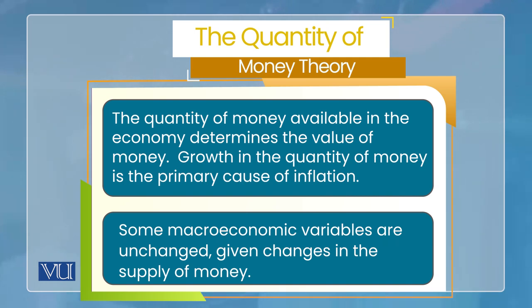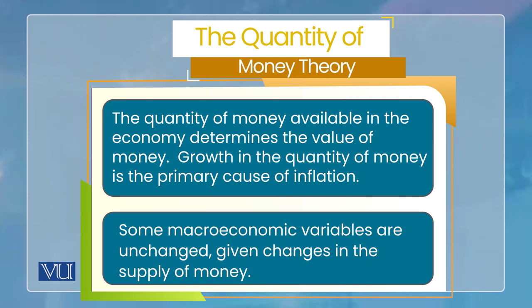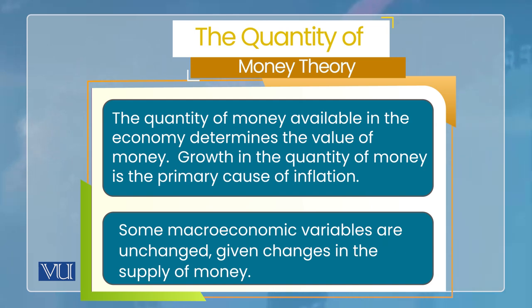یعنی کہ inflation کا primary determinant — price کے بڑھنے کا — وہ money supply ہے according to Milton Friedman. اس کو سمجھنے کے لیے money demand، money supply، money market equilibrium سمجھنا ہوگا جو کہ اس course میں already discuss ہو چکا ہے. Quantity theory of money کے مطابق: the quantity of money available in the economy determines the value of money — اور growth in the quantity of money is the primary cause of inflation.